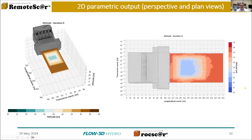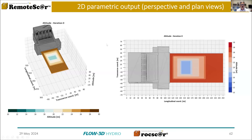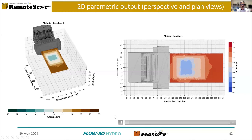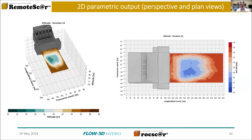Yeah, thank you. So just to show you on this — a graphical output module that is currently under development, which will be available also for RockScour and RemoteSCAR users — where you can have a perspective view and a plan view through the iterations. If I launch the video, you can follow up during the runs what is happening, with the altitude and the scour formation, with all the necessary details. You can choose also the colors if you want, and there are quite some options that will be available.